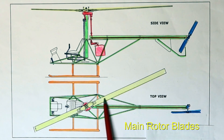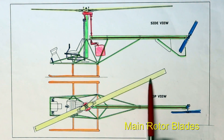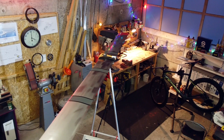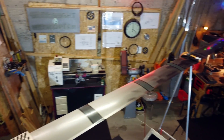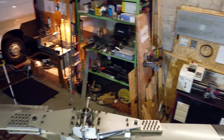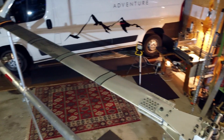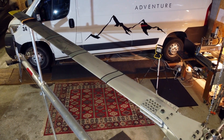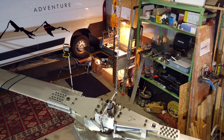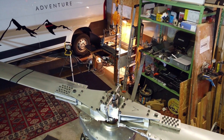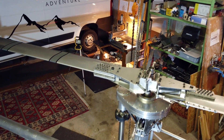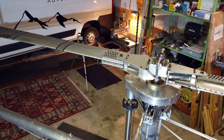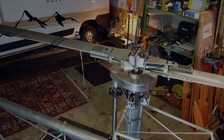Last but not least, the main rotor blades. The length of one blade on this model is 2.68 meters, and each blade weighs 11 kilograms or 24 pounds. I just wonder where all these bolts are coming from — I guess I better go back to work.